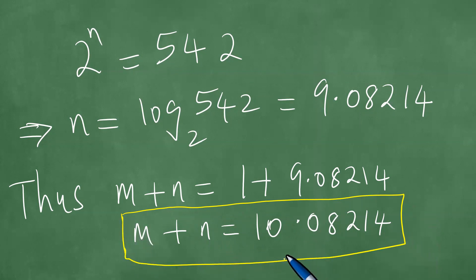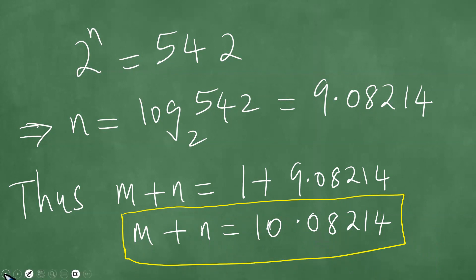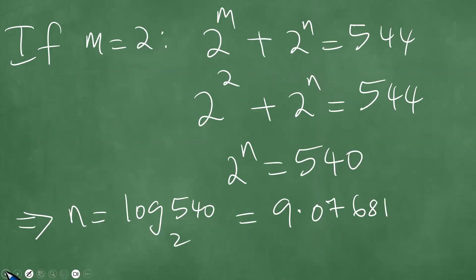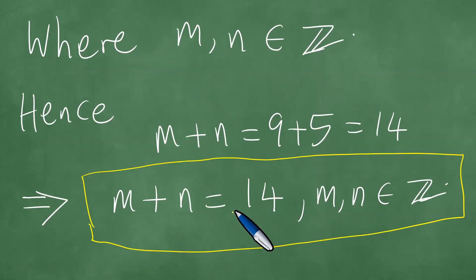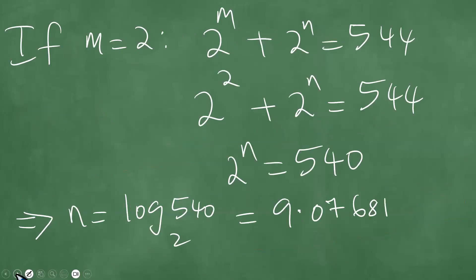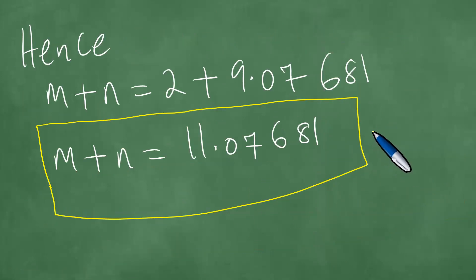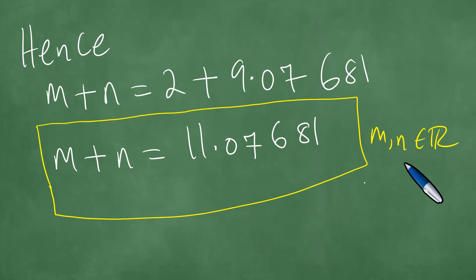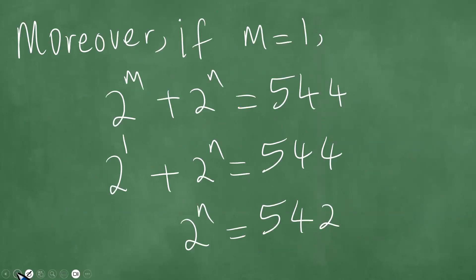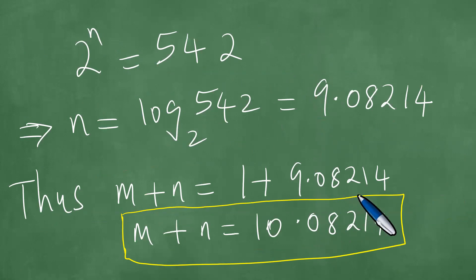We have that M plus N is 10.08214. We have a couple of possible summations: M plus N came down to 14 where M and N are integers, but here it came down to non-integer values where M and N are real numbers and not just integers.